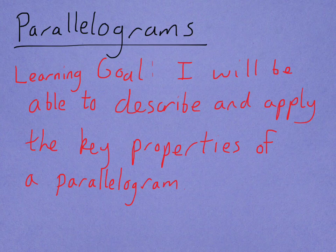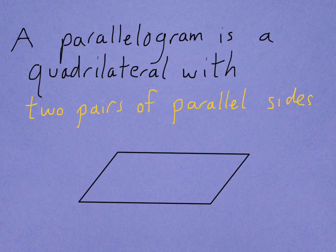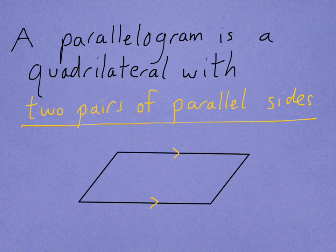First we need to talk about what a parallelogram is. You may remember from your middle school math classes that a parallelogram is a quadrilateral with two pairs of parallel sides. In the example that I've drawn below, the top and bottom sides are parallel, as indicated by those arrows, and also the right and left sides are parallel. When we have two pairs of parallel sides, that automatically creates a lot of very interesting properties. Let's take a look at those.